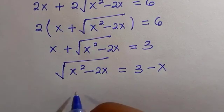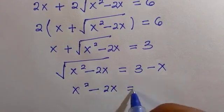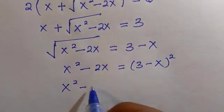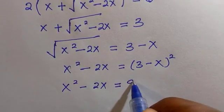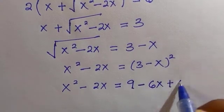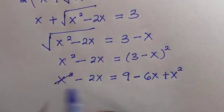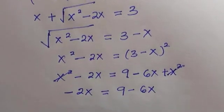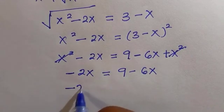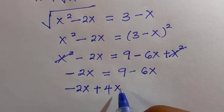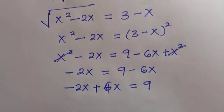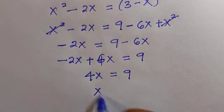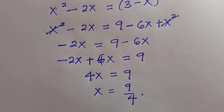We can now take the square of both sides. Doing that, we have x squared minus 2x equals 3 minus x, raised to power 2. Expanding the right side: 9 minus 6x plus x squared. The x squared terms cancel, leaving minus 2x equals 9 minus 6x. Adding 6x to both sides: 4x equals 9, so x equals 9 over 4.